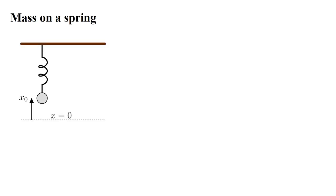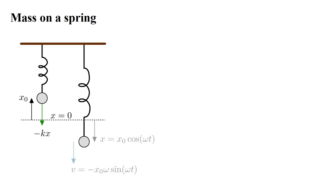Now let's analyze the mass on a spring system. We take x equals zero to be the equilibrium position of the mass, where it can remain motionless. We assume its initial displacement is x₀. The spring's force on the mass is minus kx. As time goes on, the mass moves. As we saw in the previous video, its position is x equals x₀ cosine(omega t).